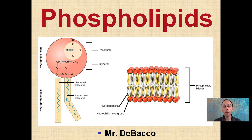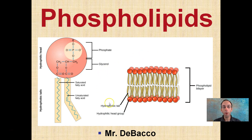Here we're looking at the last subcategory of lipids called phospholipids. This is what one individual phospholipid looks like, and this is what we call a phospholipid bilayer, where we see two layers of these phospholipids coming together. Very important for cell membranes.